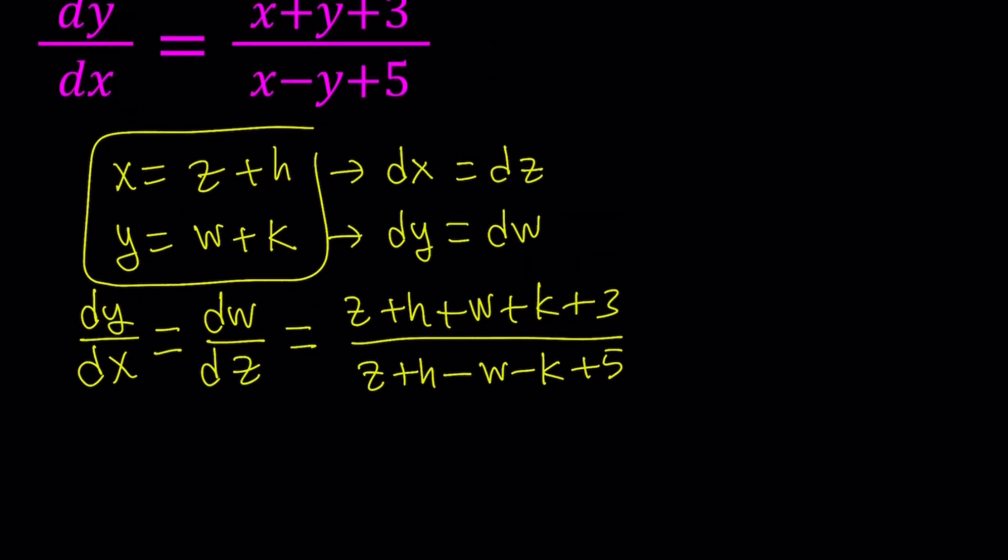Now, here's one thing I want you to notice. We can arrange these terms a little bit and put the z and w together. And let me go ahead and write those first. And then plus, and I think this is going to be z plus w. And now, let's go ahead and write the constants together. Like h plus k plus 3 and h minus k plus 5.